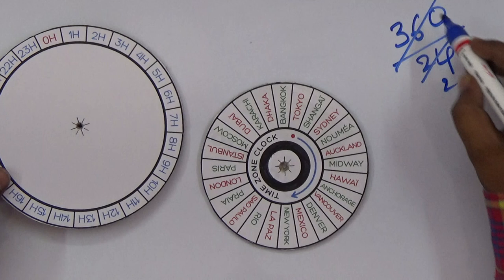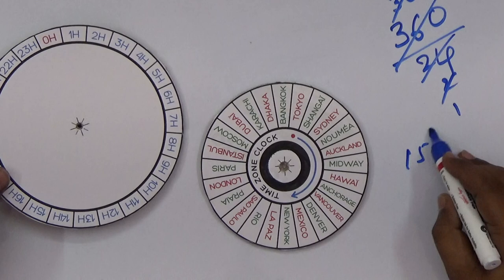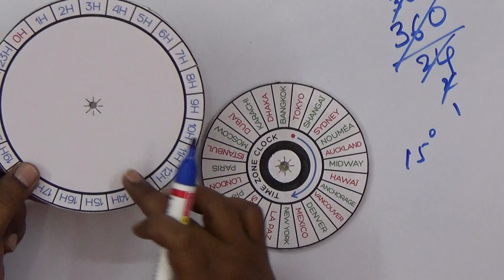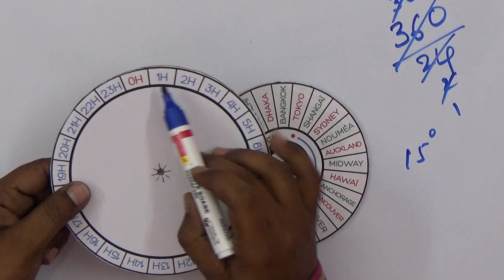Use a protractor to draw straight lines, taking 15 degrees for each part. The total is 24 parts: zero hours, one hour, two hours, three hours, four hours, continuing until 23, and then back to zero for 24.